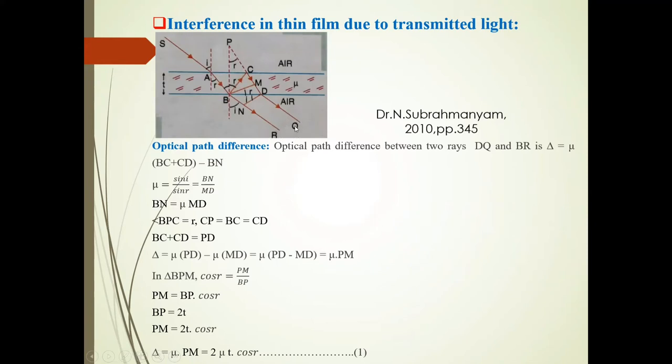For interference in transmitted light, the optical path difference between two rays DQ and BR is delta equals μ(BC + CD) minus BN. Now, μ equals sin i upon sin r equals BN upon MD, so BN equals μ times MD.